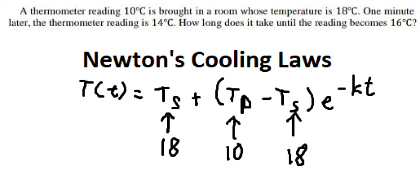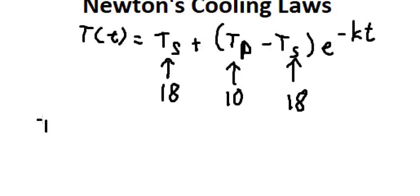Now, one minute later, the thermometer reading is 14 degrees Celsius. So that means after 1 minute, T equals 1. You got about 14. We put in here.